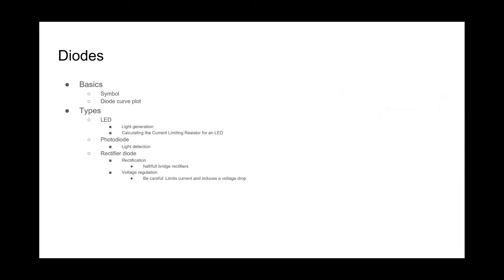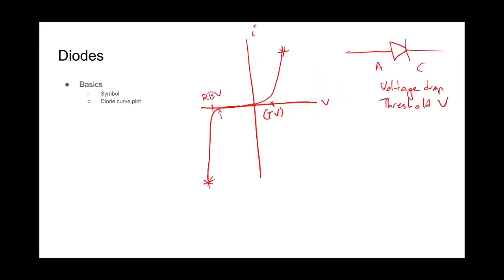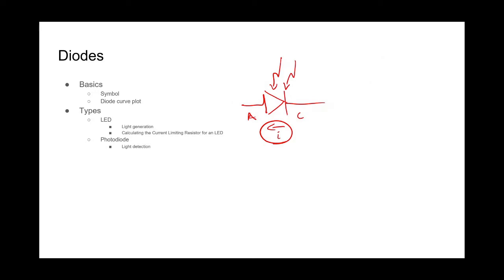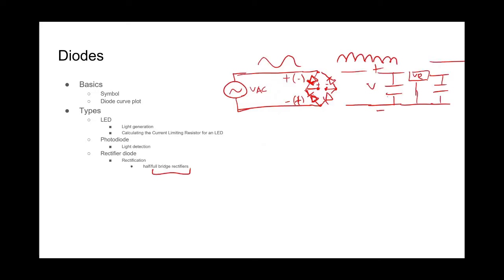Other uses for rectifier diodes include voltage regulation. I also forgot to mention typical voltage drops. For a red LED it's around 3 volts. For a green LED, around 3.5 volts. For a blue LED, around 4 volts. IR would be less, ultraviolet would be greater, and white is some combination. For photodiodes, I don't really need to consider the voltage drop because they're always operating in reverse bias. For rectifier diodes, you can generally assume a 0.7 volt drop.